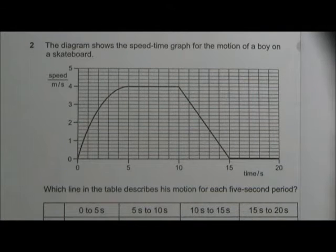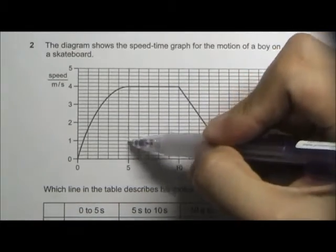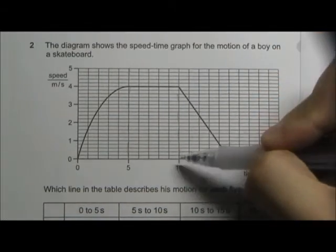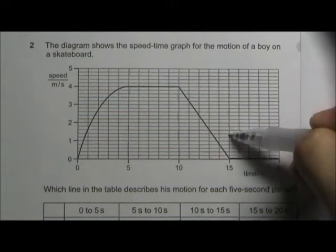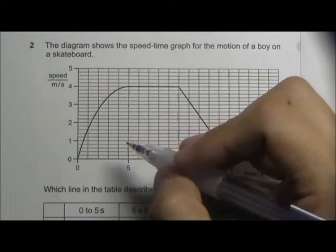We have a speed-time graph here, and we are asked to describe the motion of the object. We can see that this graph can be divided into four parts, which is from 0 to 5, 5 to 10, 10 to 15, and 15 to 20 seconds.